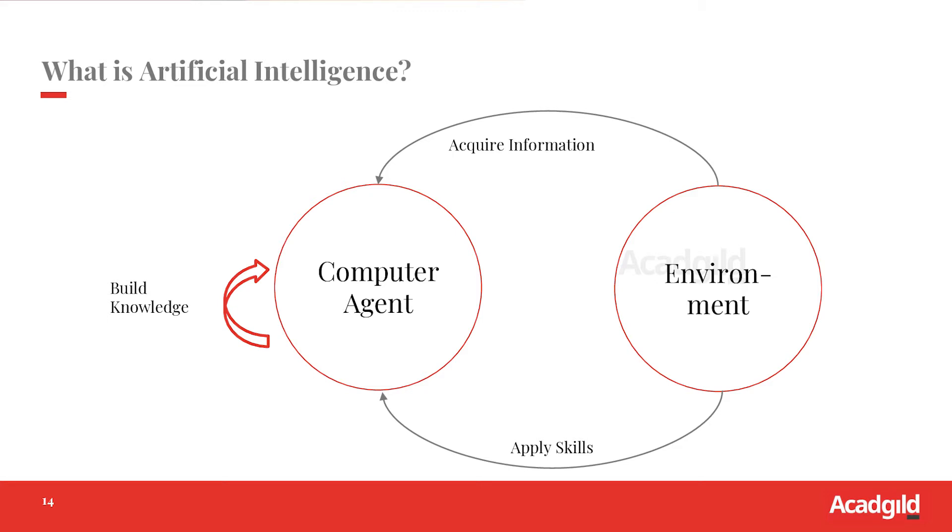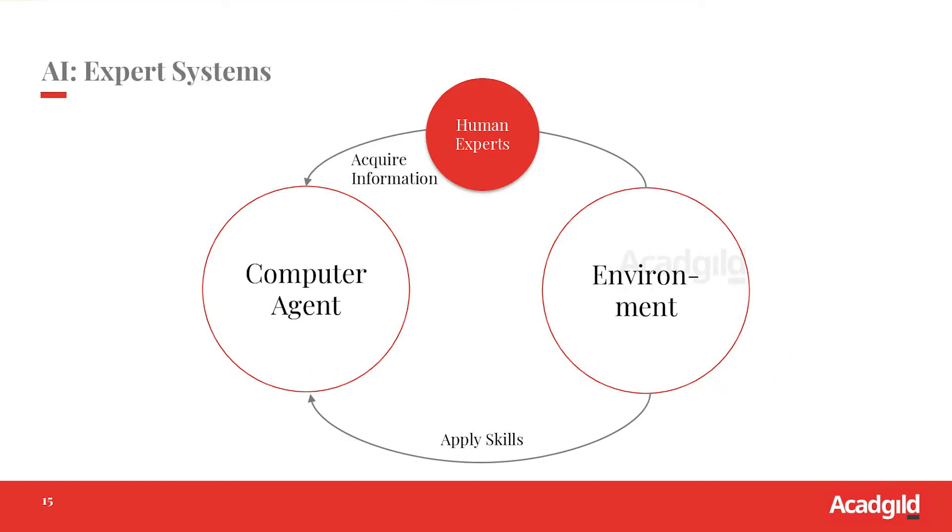So what is a human expert AI? Human expert AI is nothing but there's a human who is sitting between the environment and the agent. He tells the exact rules which you have to follow.